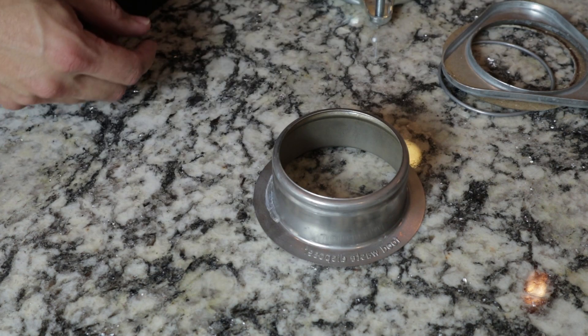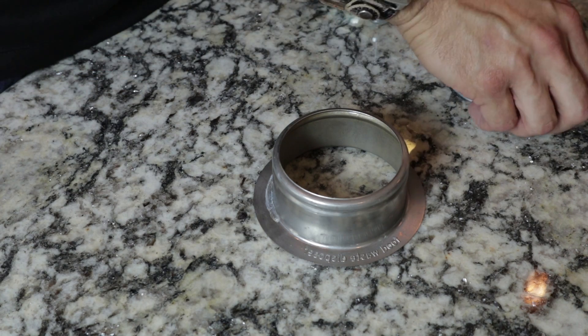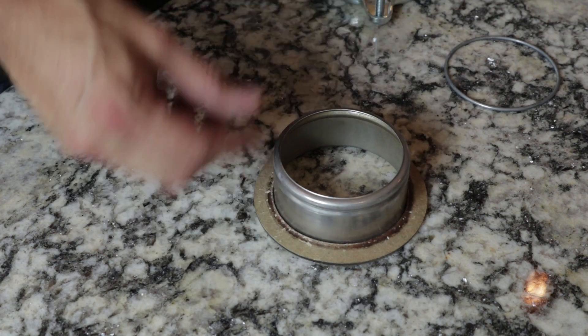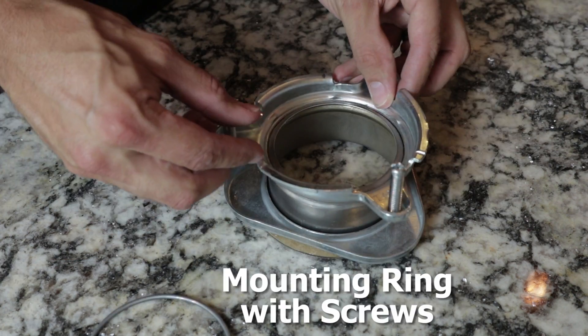Reconnecting the new disposal. When assembling the sink flange and mounting bracket, be sure to assemble it under the sink in this order: paper gasket, backup flange, mounting ring with screws.